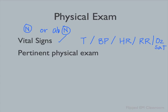You also want to note if the patient is on oxygen or not. You want to comment on whether the vital signs are normal or abnormal, and if any are abnormal, state which one. After the vital signs, you want to get into a pertinent physical examination — one that's geared towards the chief complaint. For example, for a patient with chest pain, you will want to do a cardiac and respiratory exam.